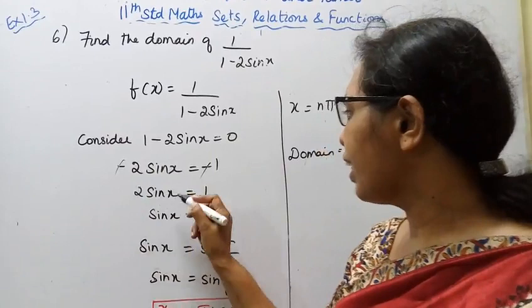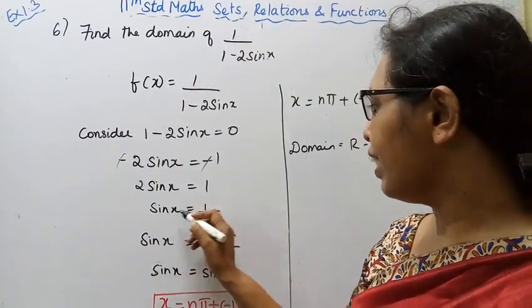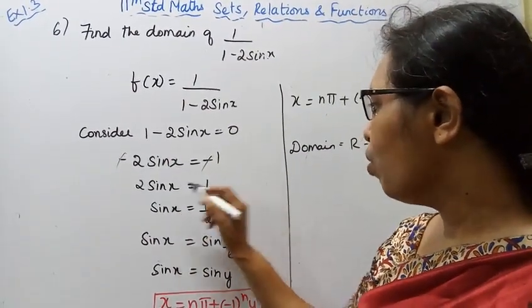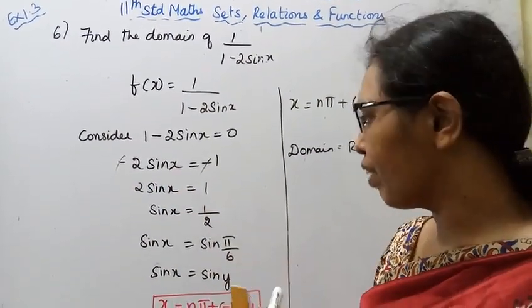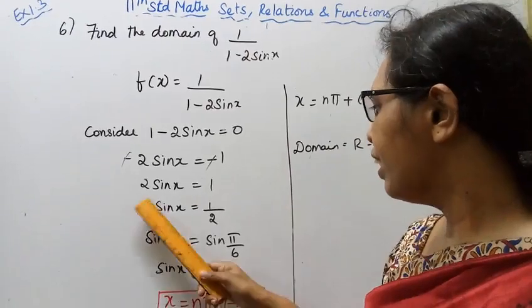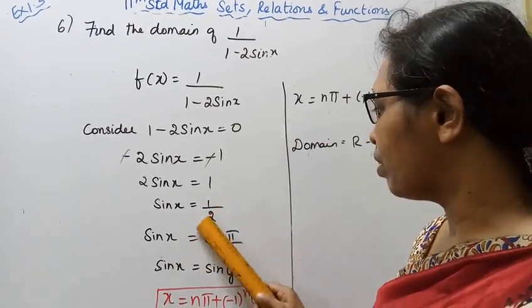2 sin x equal to 1. Therefore, sin x equal to 1 by 2.